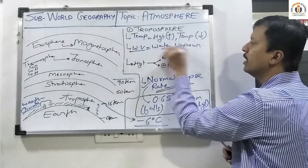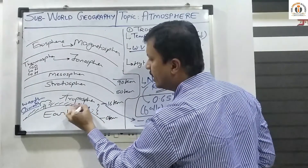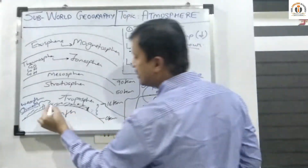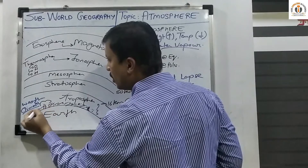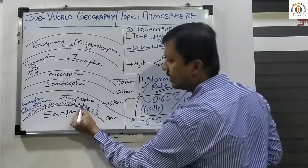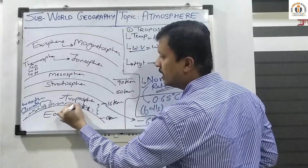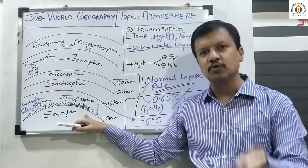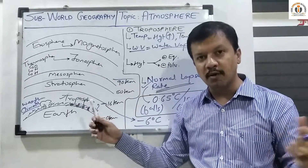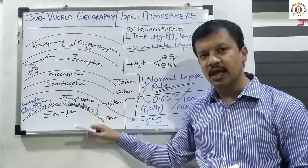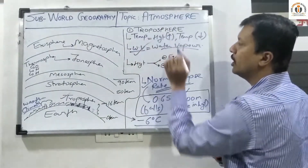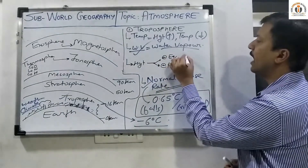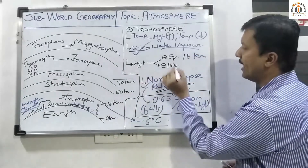Water vapor absorbs the surrounding heat. The heat that is released from the earth's surface is trapped by the water vapor, which keeps the surface layer warmer. So water vapor plays a very important role in keeping the troposphere warm. At the equator the height of the troposphere is 16 kilometers, and at the poles the height is 10 kilometers.